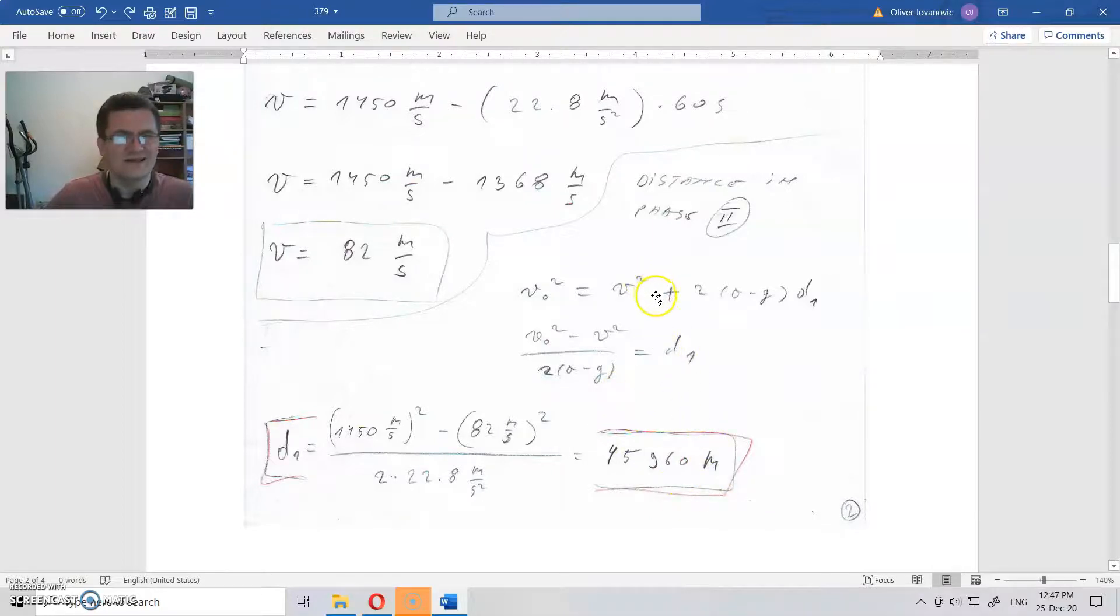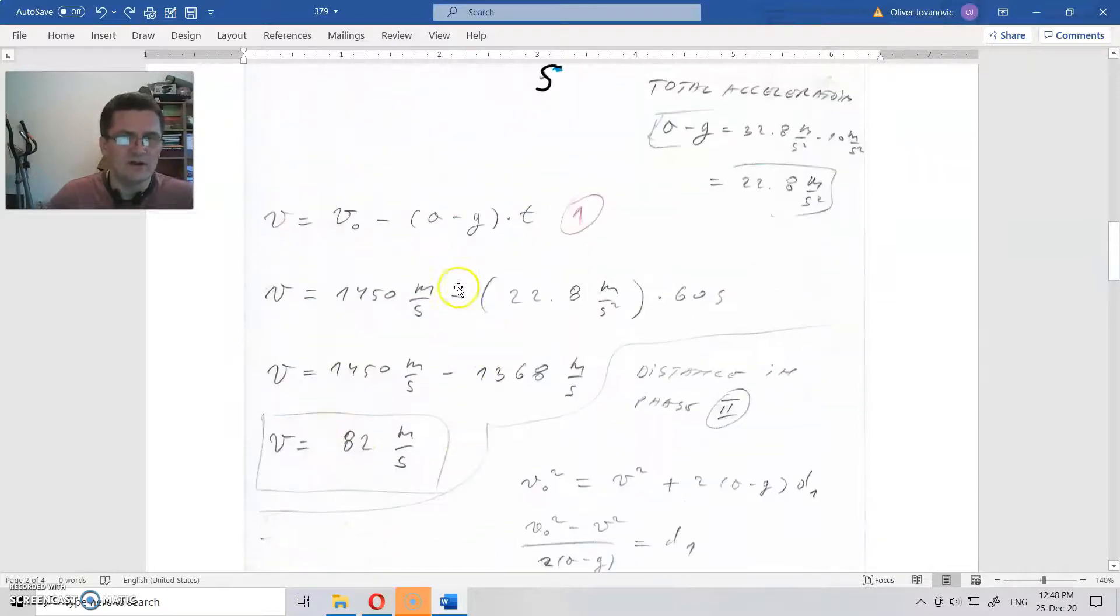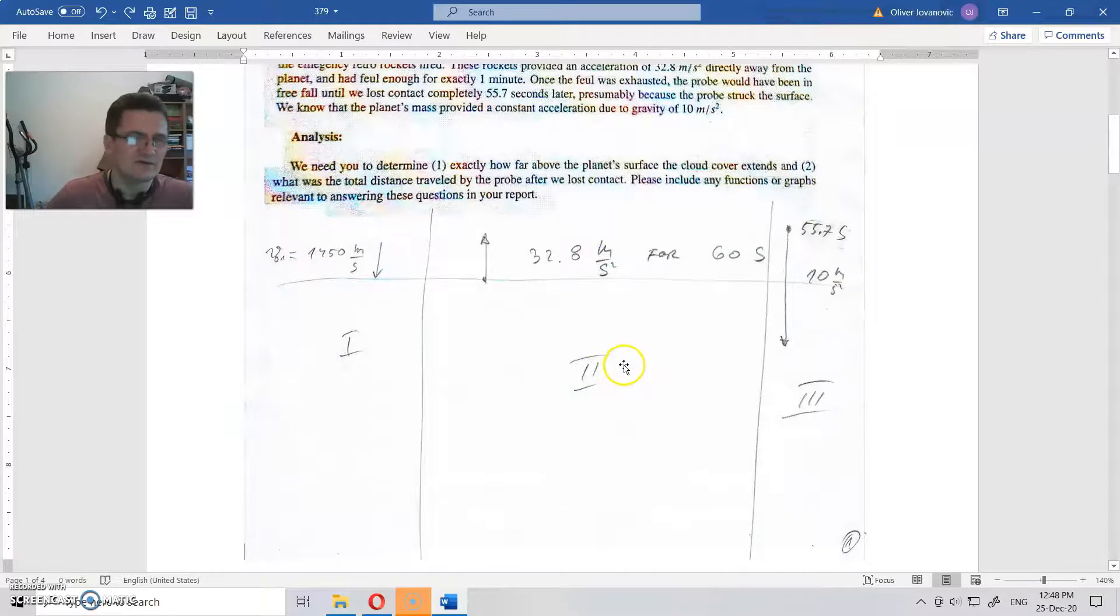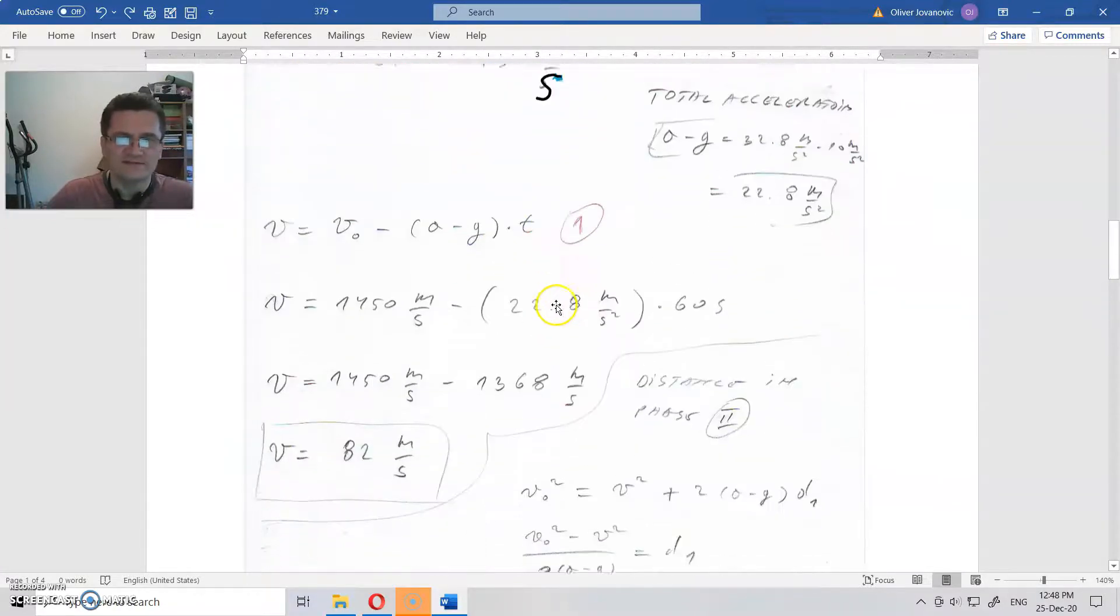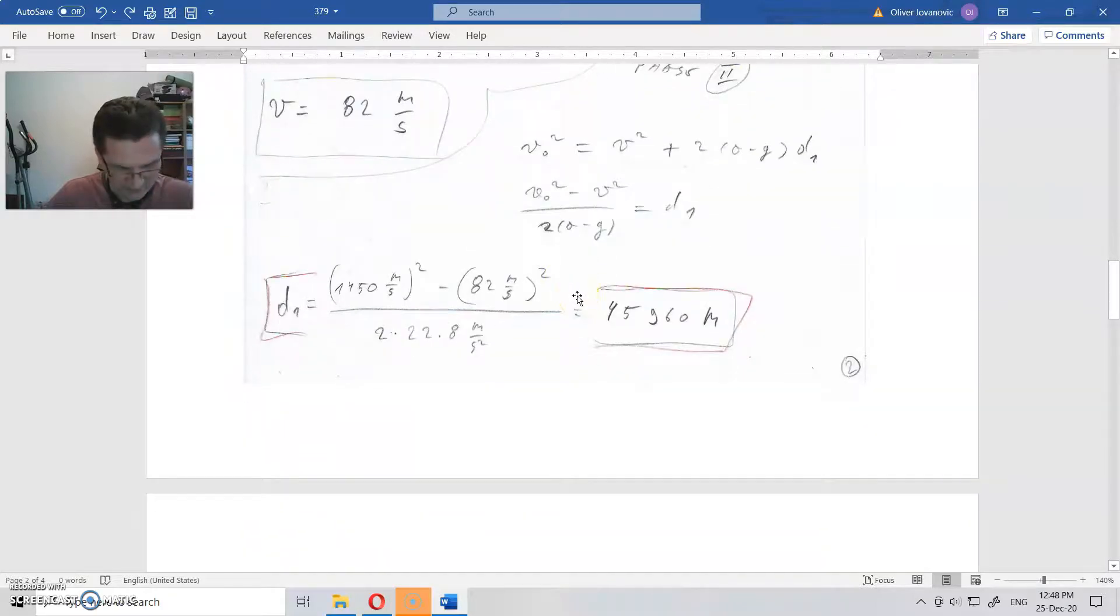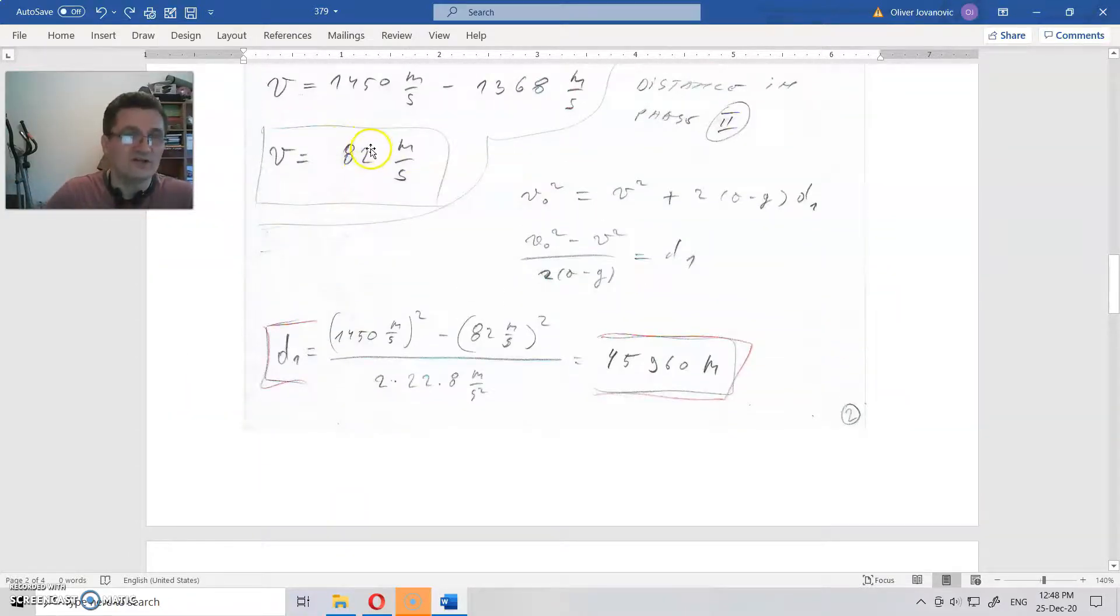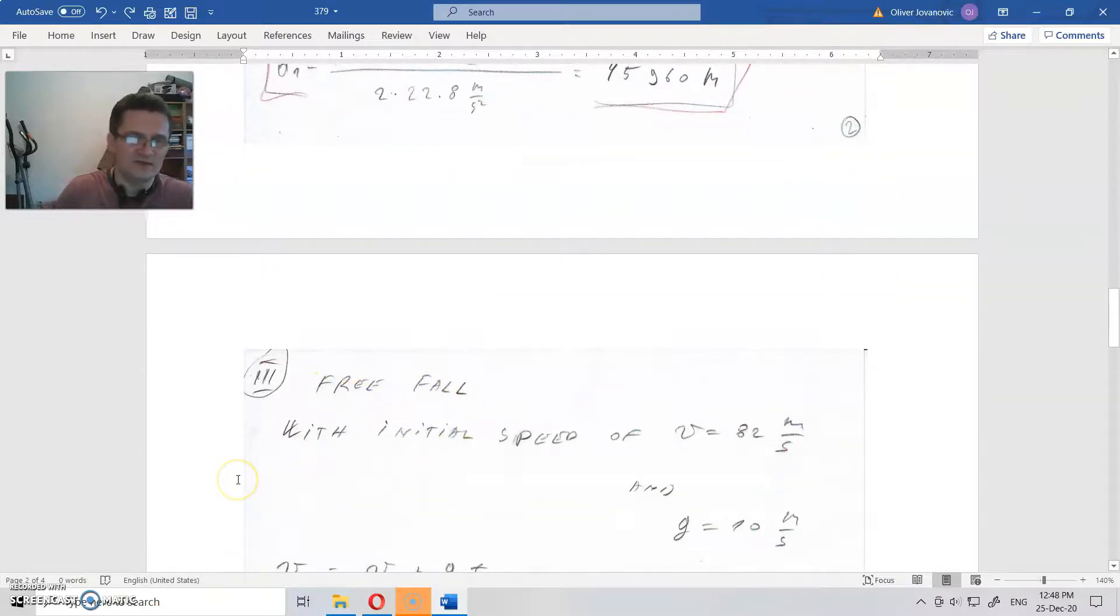All of this time, the probe decelerates, so it reduces its speed, but it never reached zero—it's almost zero but not zero. So this is the movement in the second phase of the flight. The third phase of the flight is freefall with initial speed. I wrote here 'freefall with initial velocity,' but there is no freefall with initial velocity. This is actually when you throw something downward with this amount of initial speed. So that is not freefall by definition—it is a fall with initial speed of 82 meters per second.